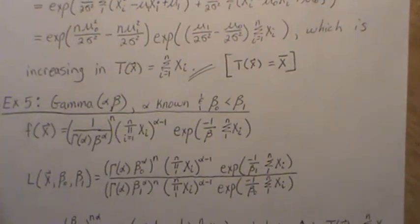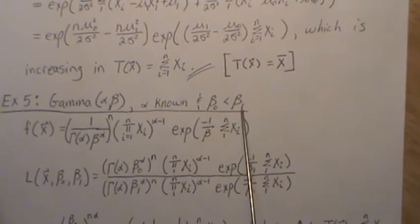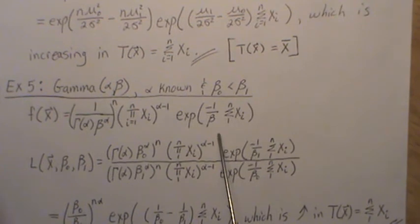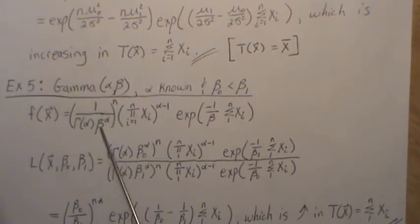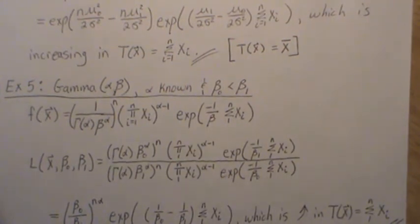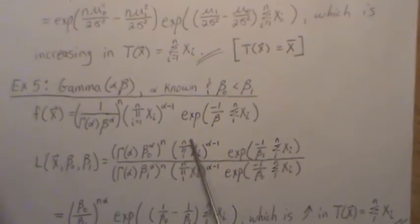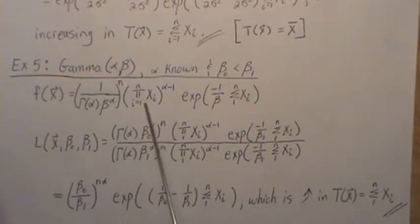Now the gamma distribution will assume that α is known and β₁ is greater than β₀. Now notice that when I write the density for the gamma, I put the β in the denominator, right? That's just kind of the way I learned it and the way I like it. You could also put it in the numerator and it won't change things.